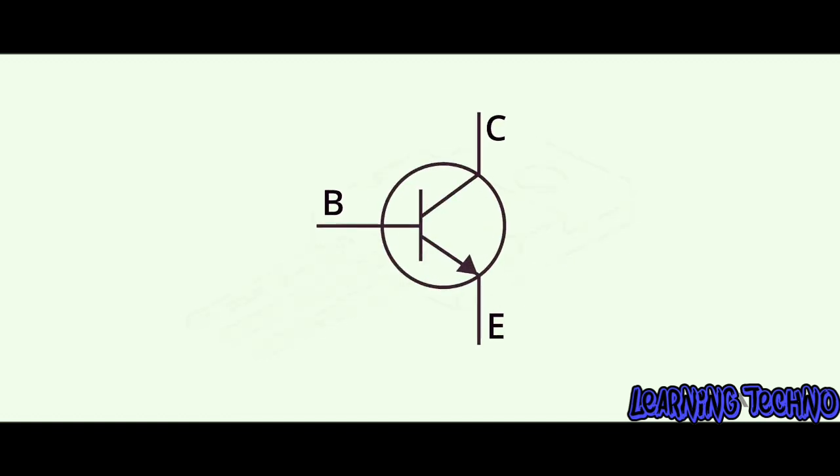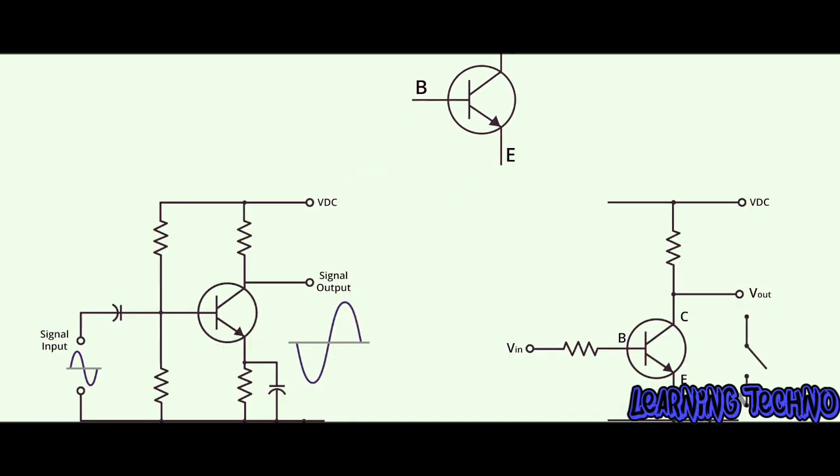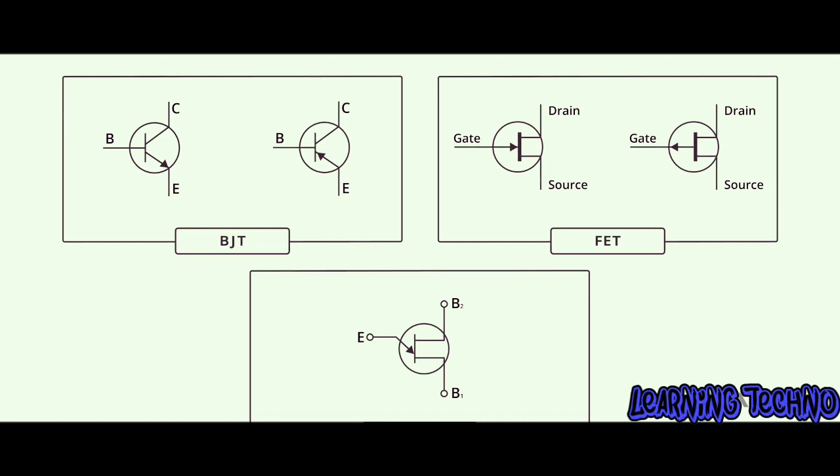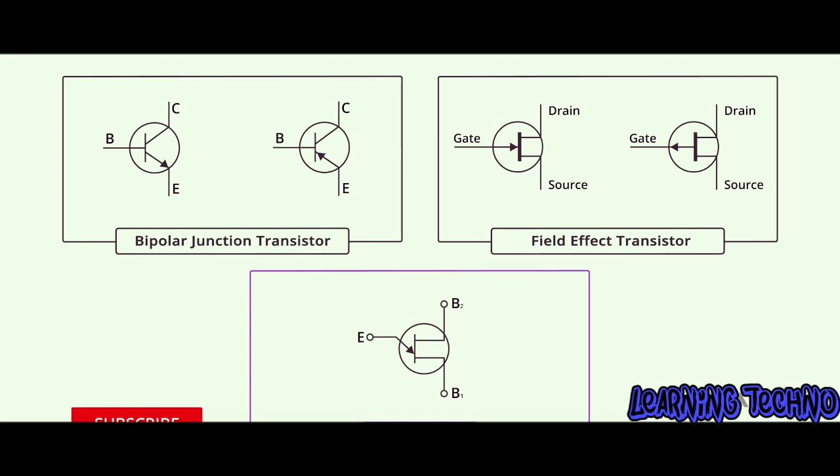A transistor is an electronic component found in a variety of circuits and is used to amplify or switch electronic signals and electrical power. There are many different transistor types, each with its own electronic symbol. To name just a few, there's the BJT or Bipolar Junction Transistor, the FET or Field Effect Transistor, and the UJT or Unit Junction Transistor.